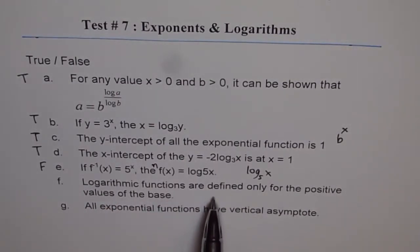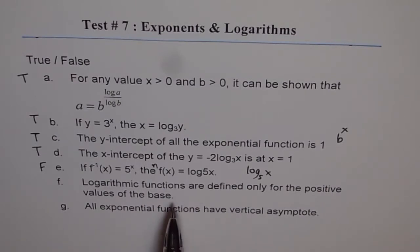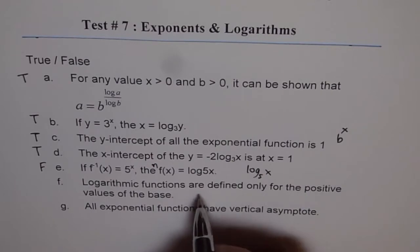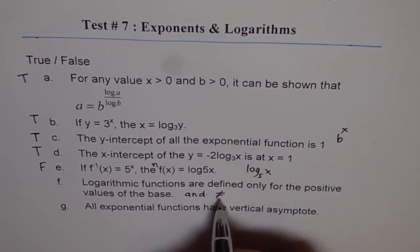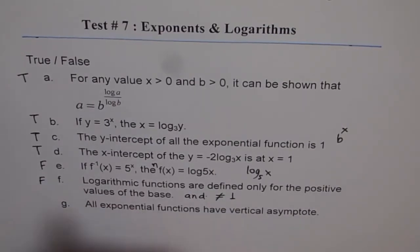Logarithmic functions are defined only for positive values of the base. This is kind of correct and you have to exclude 1 also, right? And not equal to 1, right? So base cannot be 1. So this is false, correct? So we are missing a part.